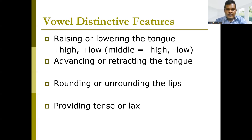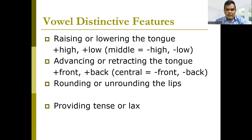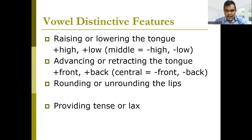By advancing or retracting the tongue, we also have two features: front and back. Even though three positions are identified in the cardinal vowel system, based on distinctive features only two are used — front and back. Central vowels are represented by negative front and negative back, similar to how middle vowels are handled. So there is no positive central.